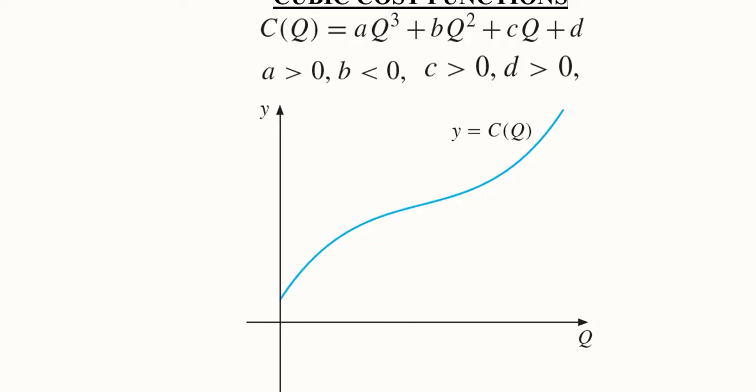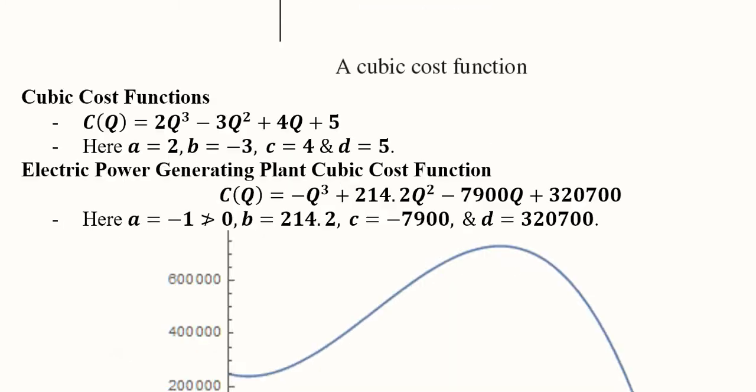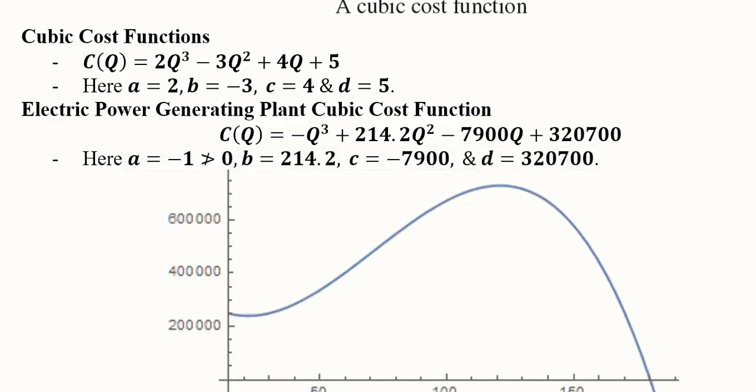A cubic cost function numerical instance would be this: here you can see the value of a is 2, the value of b is minus 3, and the value of c is 4, and the value of d is 5.